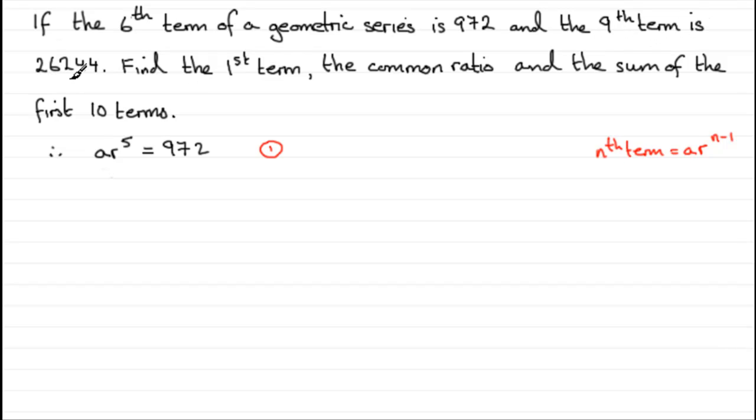What we do is use this other fact, that the 9th term is 26,244. That means that by applying this formula, the 9th term, n being 9, is going to lead to ar^(9-1), ar^8 in other words, equals 26,244. We'll label this equation 2.